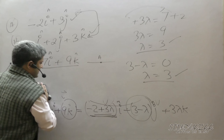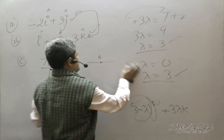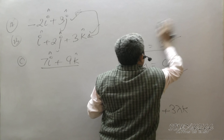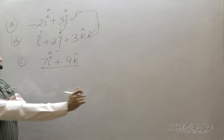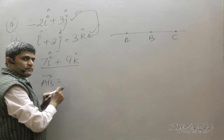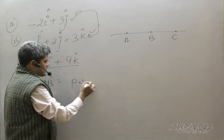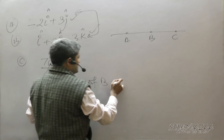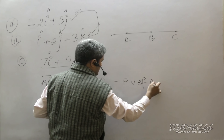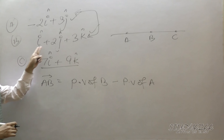Second approach: collinearity using the vector method. Suppose the points are A, B, and C. I will find vector AB. Vector AB equals position vector of B minus position vector of A. Position vector of B is i plus 2j plus 3k, and position vector of A is minus 2i plus 3j.